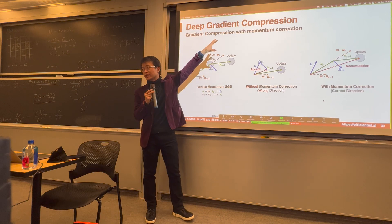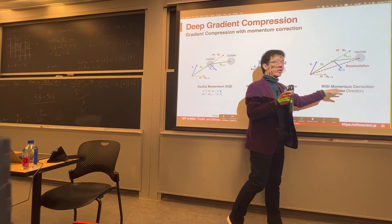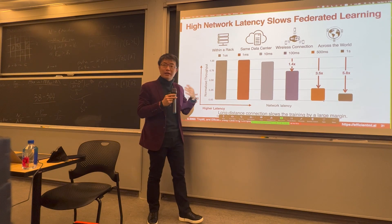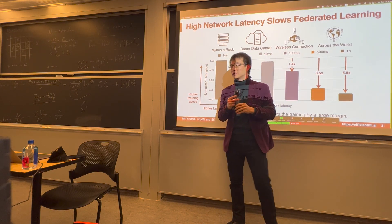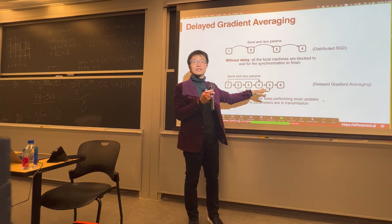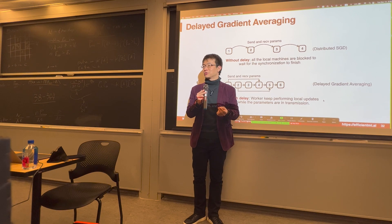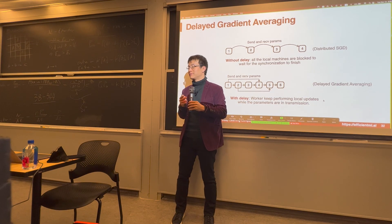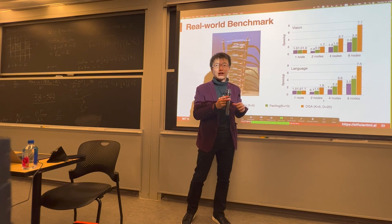For example, with deep gradient compression, only one in a thousand gradients actually needs to be sent — but we need to correct the momentum to ensure no loss of accuracy. Another big issue is latency. As latency increases from a few milliseconds to one second, training speed drastically decreases. We learn about delayed gradient averaging to tolerate long latency — you can move forward even before receiving the gradient and tolerate stale gradients, like utilizing late days on homework. We demonstrated speedup using an eight-node Raspberry Pi cluster, showing the effectiveness of these methods.